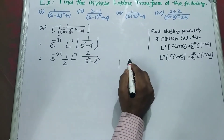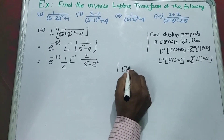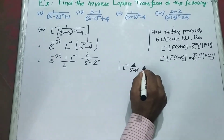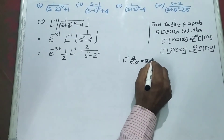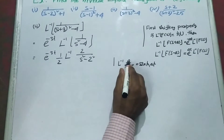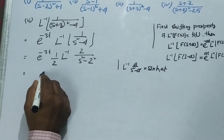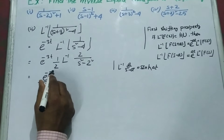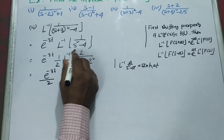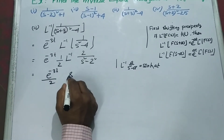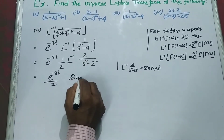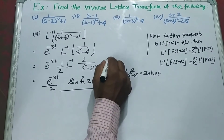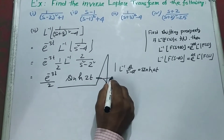Recalling the formula: L inverse of A by (s squared minus A squared) equals sinh(At). So we write numerator as 2 and include 1 by 2 outside. The answer is e to the power minus 3t times (1/2) sinh(2t).